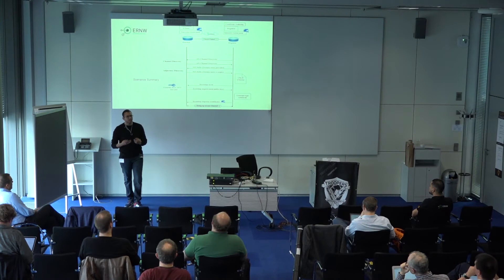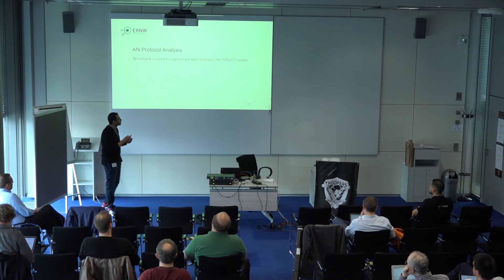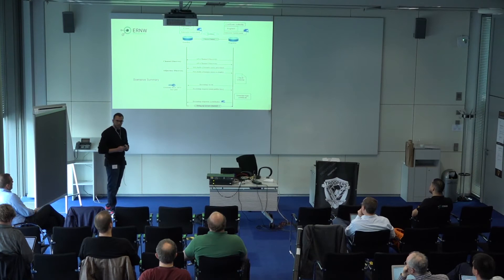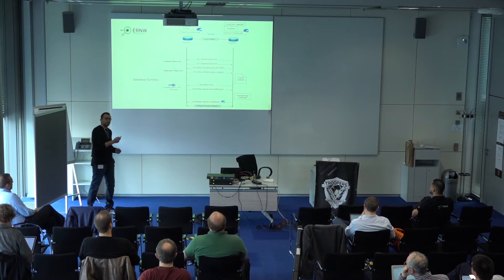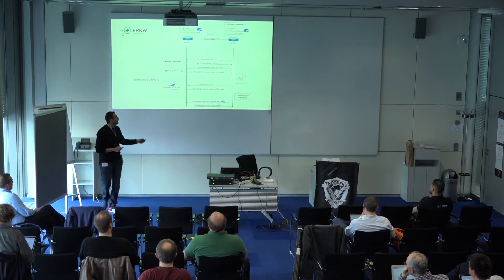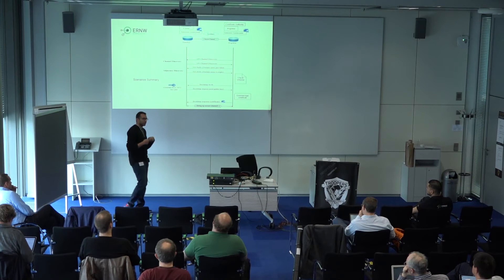To summarize the theoretical implementation: the registrar starts with channel discovery, sending Layer 2 probes asking for any autonomic devices. Once you respond, we finish the Layer 2 phase and start adjacency discovery, where the registrar declares its domain and checks if your domain name is empty. If it is, it checks the whitelist, asks you to generate a key, signs your certificate, and passes it back. After that, we have a secure, encrypted, authenticated channel.